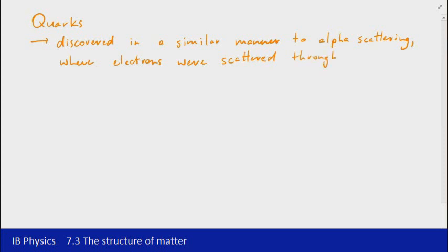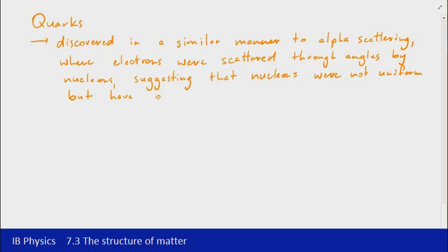And they were scattered through large angles, in a similar way to what we saw with alpha scattering with the gold foil. They were scattered through large angles by nucleons, and that suggested that the nucleons didn't actually have an evenly distributed charge. So it suggested that nucleons were not uniform, and by uniform we mean that they weren't the same throughout, but have discrete charges in them. And those discrete charges were found to be corresponding to the quarks that they contained.